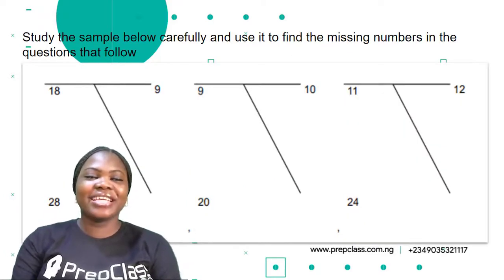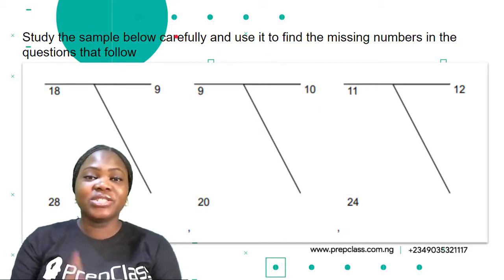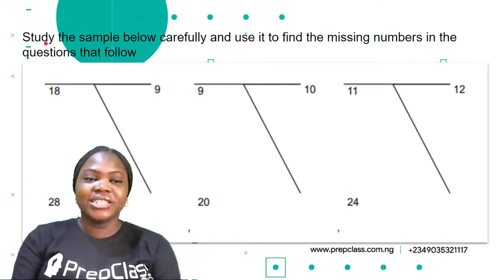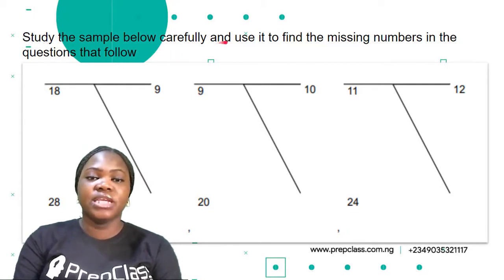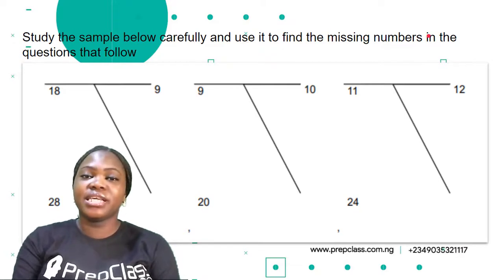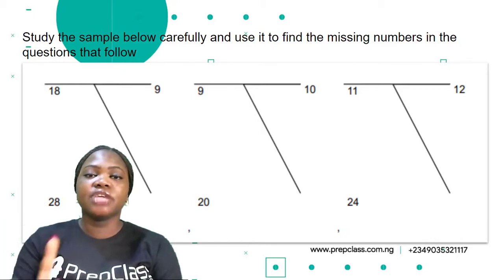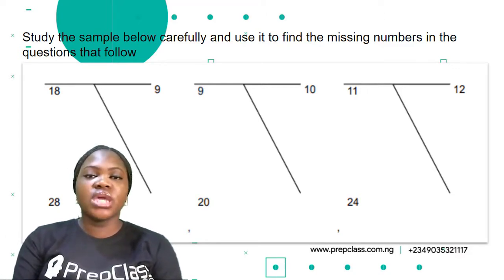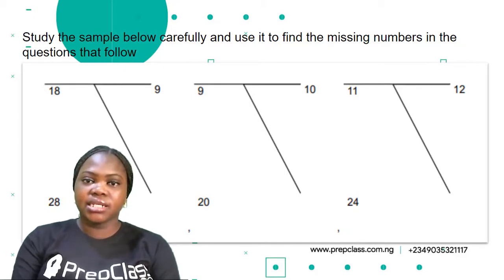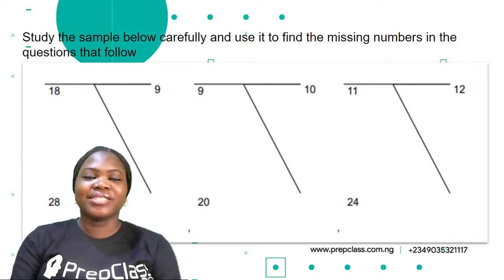We are given some sets of samples — study the sample below carefully. Take note of the keyword: study. You have to study these samples before you move on to your questions, and use them to find the missing numbers in the questions that follow. In quantitative reasoning, we study, we think very well, and understand the samples. Once you're able to understand the samples, you'll be able to do any of the questions easily.